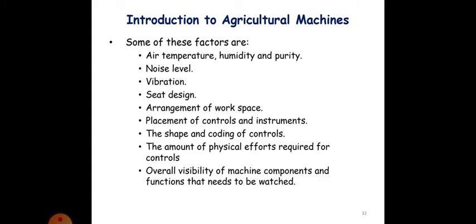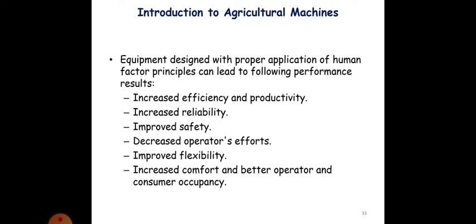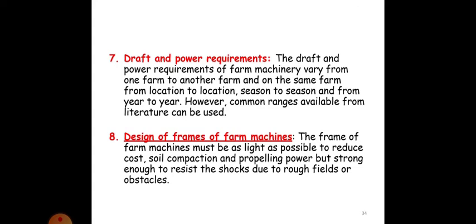Equipment designed with proper application of human factor principles can lead to the following performance results: increased efficiency and productivity, increased reliability, improved safety, decreased operator's effort, improved flexibility and increased comfort and better operator and consumer occupancy. The draft and power requirements of farm machinery vary from farm to farm, from location to location, season to season and year to year. However, common ranges are available from literature. The design of frames of farm machines should be light as possible to reduce cost but strong enough to resist shocks due to rough fields or obstacles.